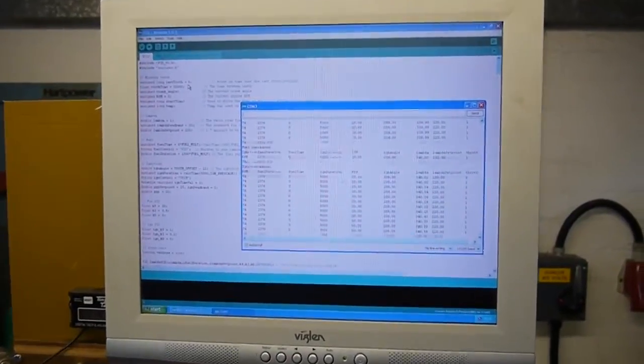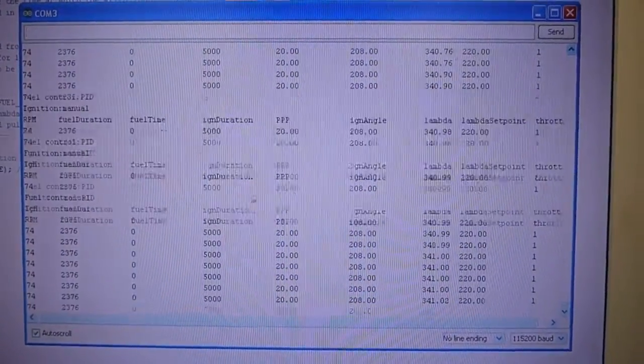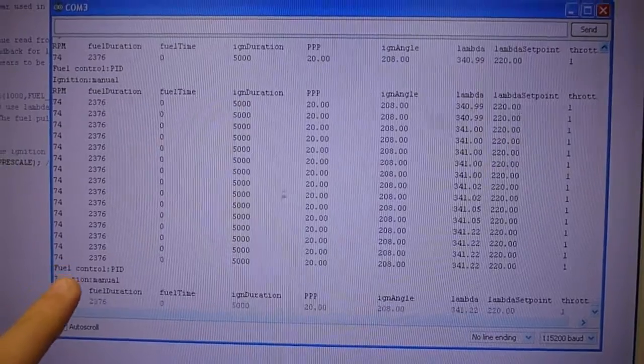A USB connection then to this computer here, basically for programming and viewing the engine information. So here we can see for example the engine RPM.